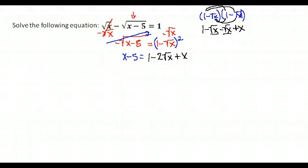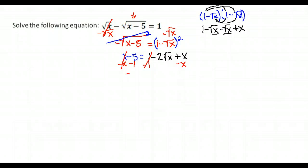We still have a radical in our problem, and that's going to happen anytime you have two radicals. So we have to isolate the radical again. Now we're going to move everything from the right-hand side over to the left-hand side, except for the radical. Notice my x's cancel, and I get negative 6 is equal to negative 2 times the square root of x.